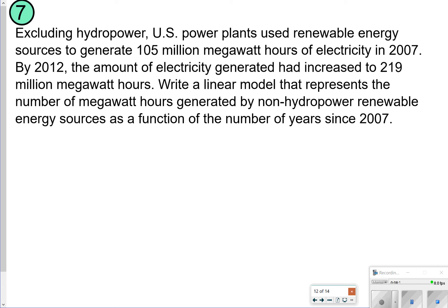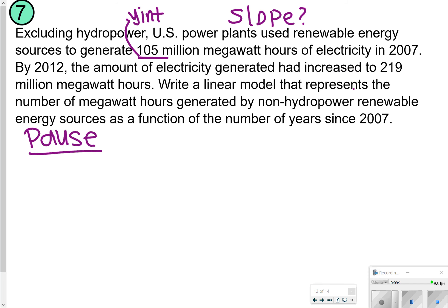The last one is a word problem. Excluding hydropower, U.S. power plants use renewable energy sources to generate 105 megawatt hours of electricity in 2007 — that's your starting amount. By 2012, the amount had increased to 219 megawatt hours. Write a linear model representing megawatts generated as a function of the number of years since 2007. The 105 megawatt hours is your y-intercept because it's the starting value. You need to figure out what to use for the slope. Let's pause here so you can try number 7 by yourself.